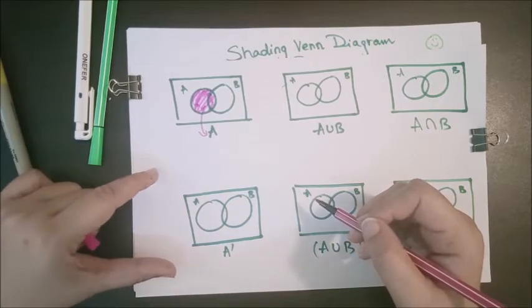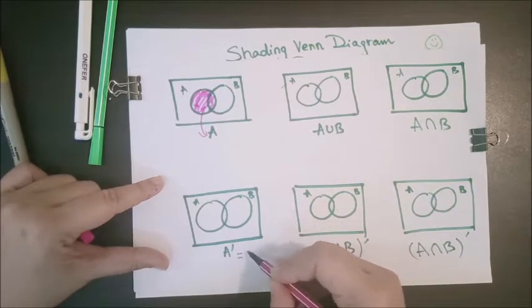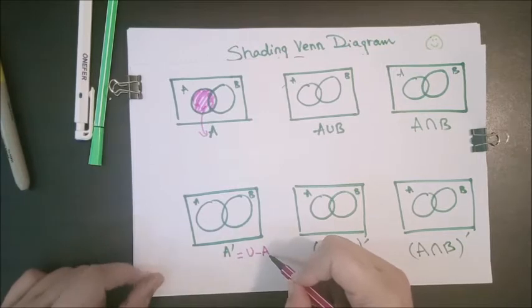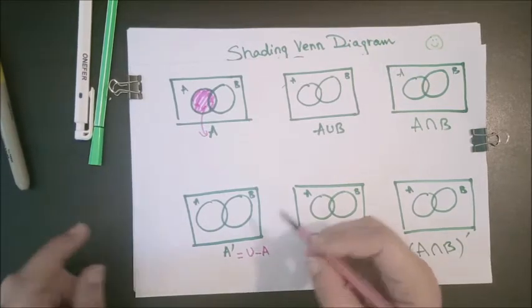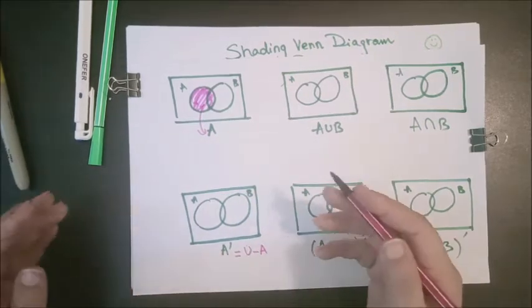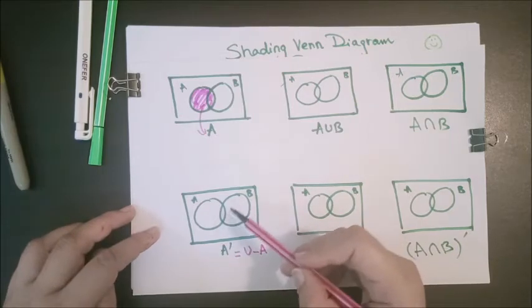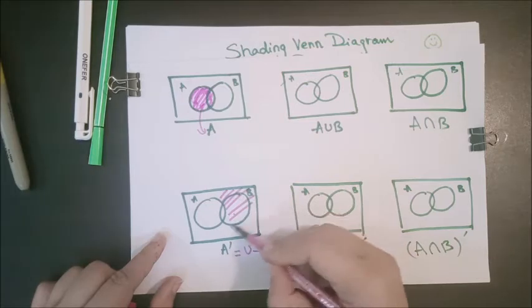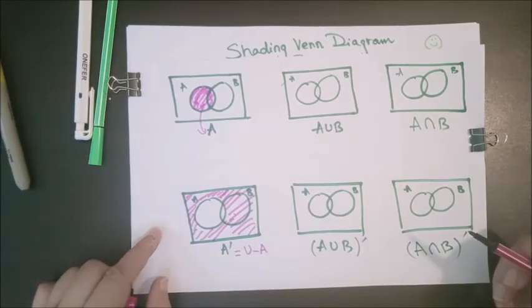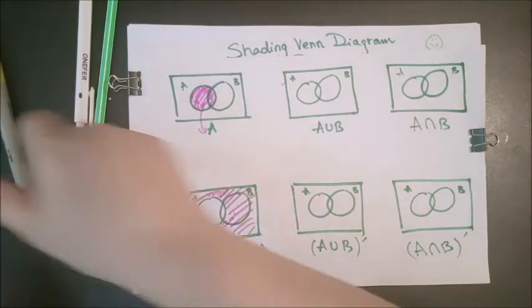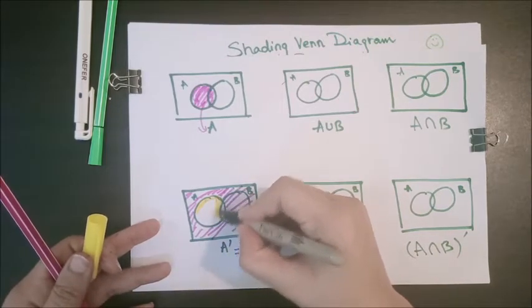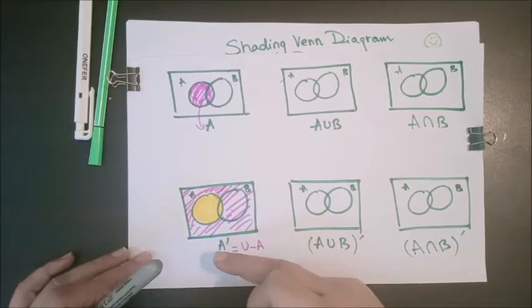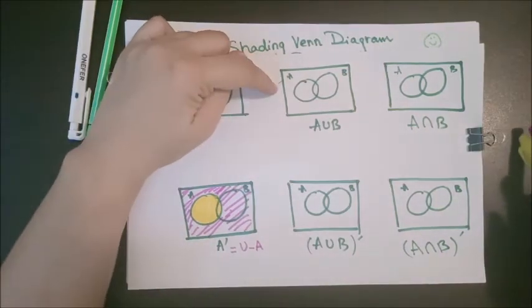Now for the complement part: complement means A dash, which equals universal set minus A. Whatever is present in A is excluded, so everything other than A is your A complement — the opposite of A. To shade A dash, we leave set A and shade all other portions. I am representing A in yellow so you have a clear idea: whatever is in A you leave, and the pink portion — all other than A — is your A complement.